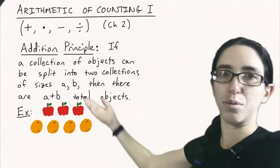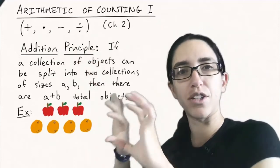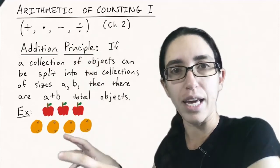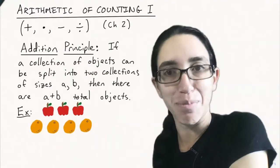So let's start with the addition principle, which says if a collection of objects can be split into two different collections of sizes a and b, then in total there are a plus b objects.